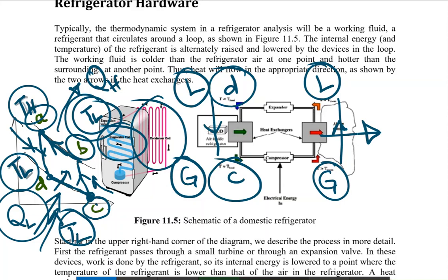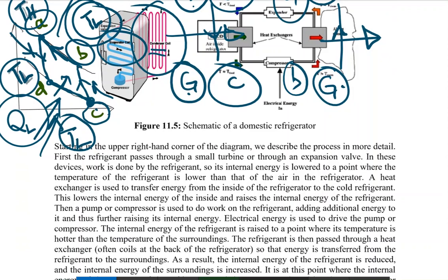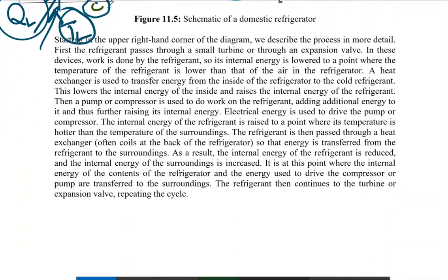To summarize: from D to C, heat is absorbed in the evaporator as liquid converts to gas at constant temperature. From B to A, heat is rejected in the condenser as gas converts back to liquid at constant temperature. If you have any questions, please post them in the classroom. Thank you and have a nice time.